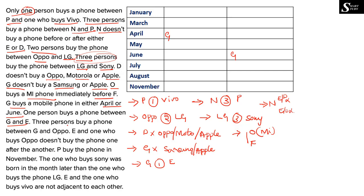Three persons buy a phone between G and Oppo. If G is in April, going down 1, 2, 3 — Oppo falls in August. If G is in June, going up 1, 2, 3 — Oppo falls in March. We already know between Oppo and LG there must be a gap of 2 persons, so LG is placed accordingly. Then between LG and Sony there must be a gap of 3 persons, placing Sony as well.